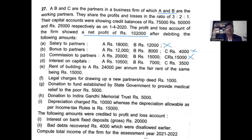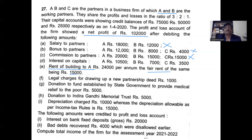Rent of building paid to A is generally allowable, but the actual rent paid is 24,000 whereas the fair rent of the same building is only 15,000. The Income Tax Department will not allow more than fair rent, so out of 24,000, only 15,000 is allowable and the excess 9,000 is disallowed.